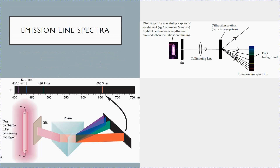So if you have a discharge tube — for example, if you look at the diagram on the left — if you have a discharge tube that contains hydrogen, then if the light coming from this hydrogen discharge tube is passed through a slit and then through a prism, the light will be split according to the colors that it contains.